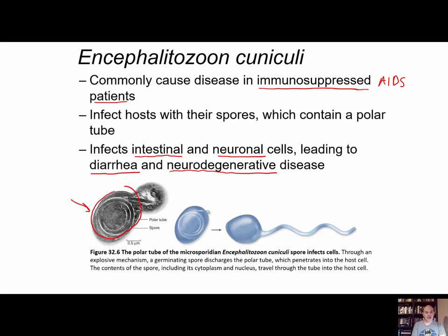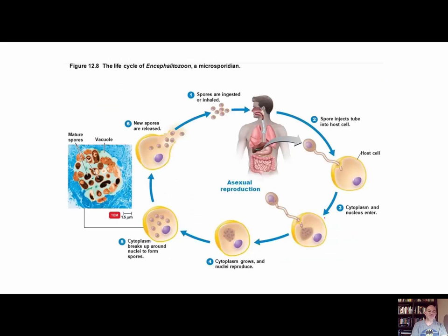Here's an electron micrograph of the spore, and you can see the polar tube coiled up within it. When the spore enters the host and finds the correct cells to invade, it ejects its polar tube, allowing the cytoplasm and nucleus to enter the host cell. The spores get ingested and make their way to the intestine, eject the polar tube, and the cytoplasm is released into the cell. Within the host cell cytoplasm, the nuclei multiply, the host cell's cytoplasm breaks down, likely killing the host cell, and then new spores are released into the environment — perhaps through feces.